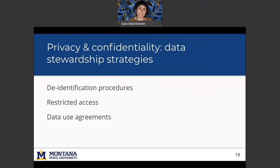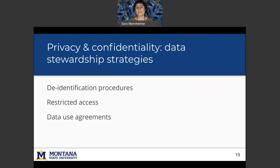And then if data can't be safely de-identified or shared, repositories can support restricted access. And this can be true for both types of data. You can embargo the data for a period of time or you can fully restrict it. And then data use agreements dictate the conditions required for other researchers to access and use the data.